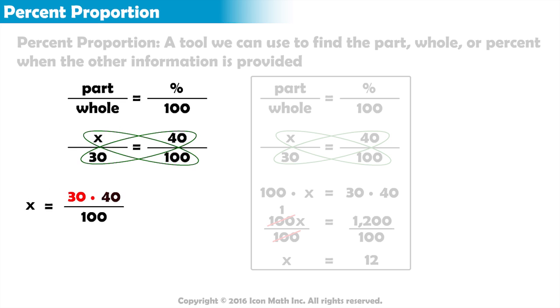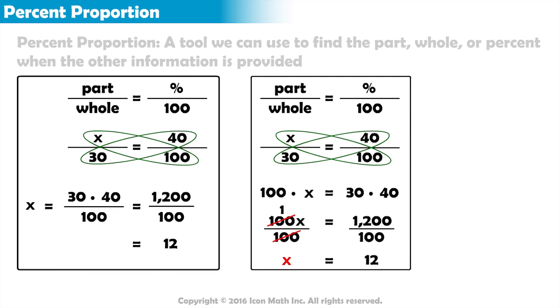30 times 40 equals 1,200. 1,200 divided by 100 equals 12. x equals 12. 40% of 30 is 12.